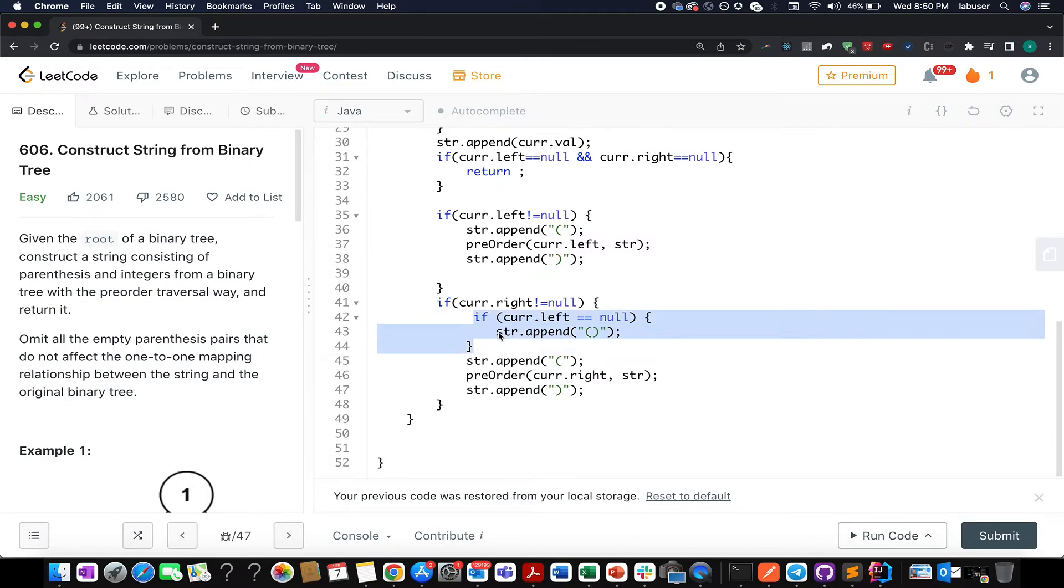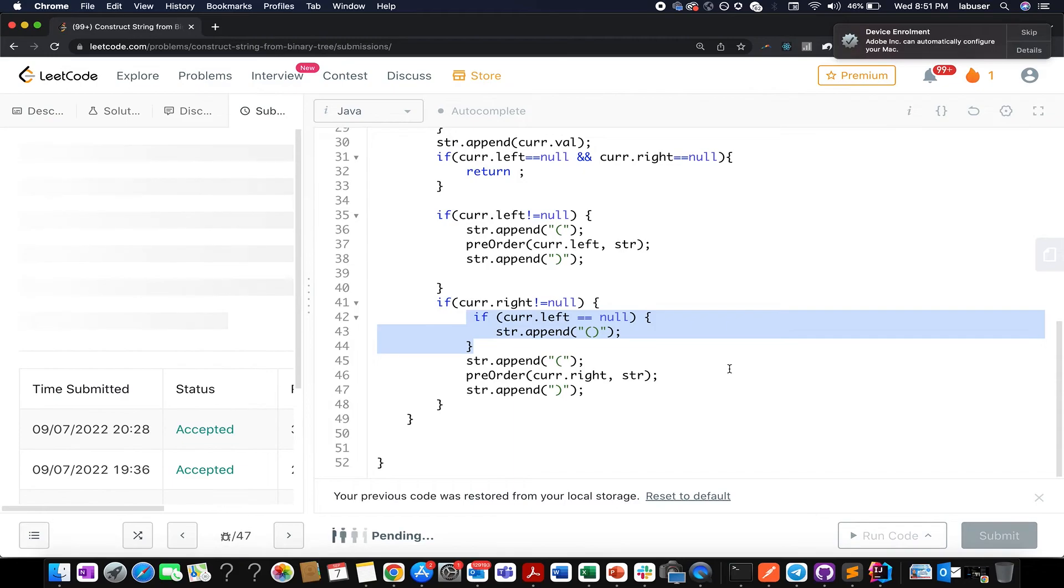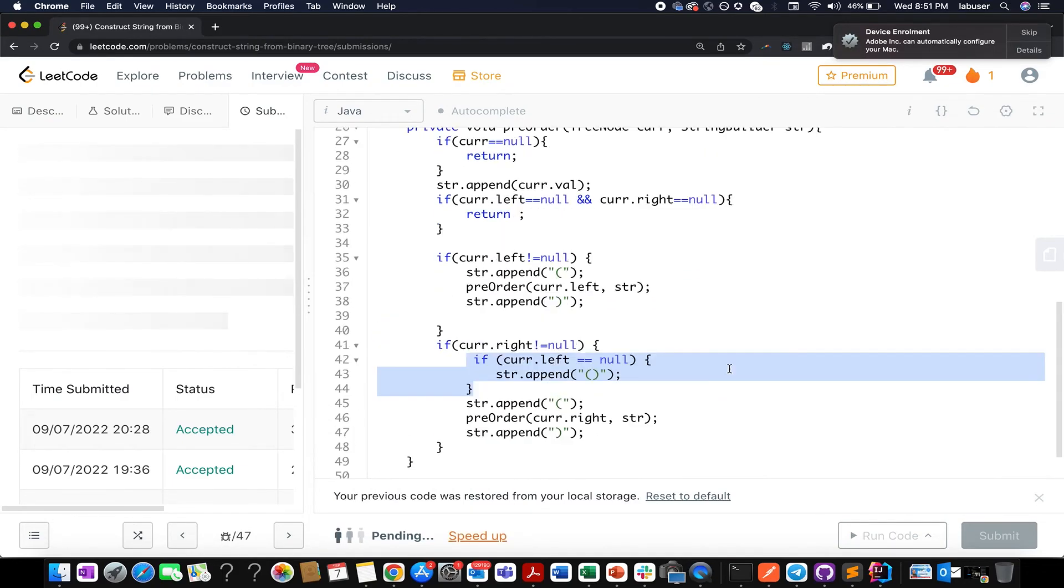There's one corner case that we should think of while building the complete algorithm: when we are in the right side, we should always check if current.left is null or not. In case it is null, then we should be appending an empty complete opening and closing bracket onto it. So this is an important statement. People often tend to miss this out and that was the reason I talked about this particular case at the start of the question.